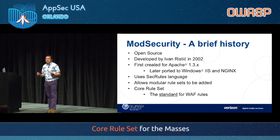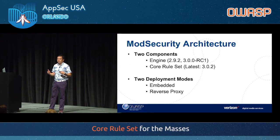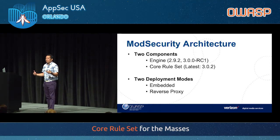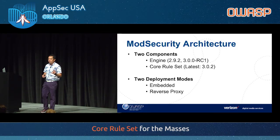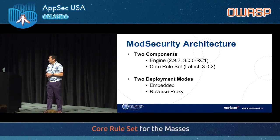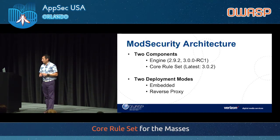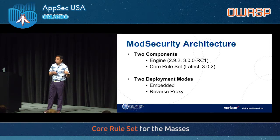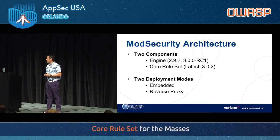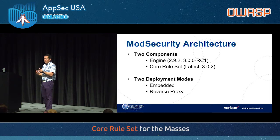Mod security is modular, and the core rule set (CRS) is the standard and default set of web rules for mod security. When you say mod security, there are actually two parts: the engine and the core rule set. The latest stable version of the engine is 2.9.2, and the 3.0 engine is in alpha/beta. The core rule set 3.0 came out late last year, and we've done bug fixes and optimization — we're now at 3.0.2. They do work together; you don't need the 3.0 engine for the 3.0 rule set. Version 2.9.2 definitely supports the 3.0 rule set.